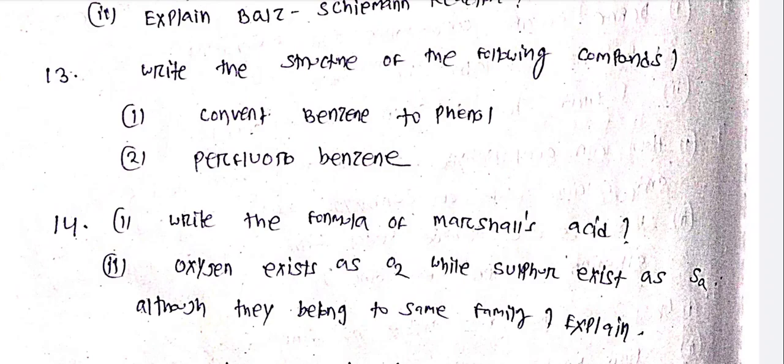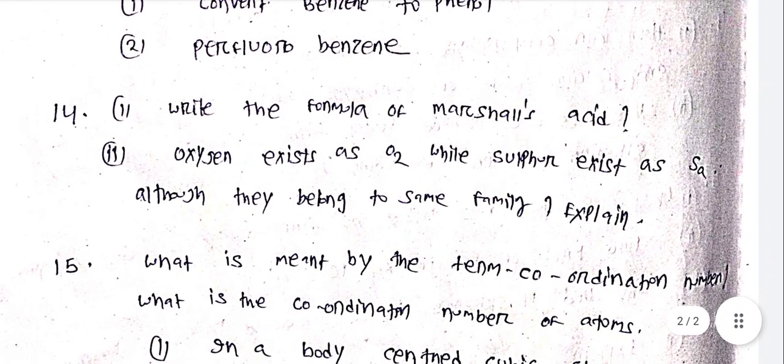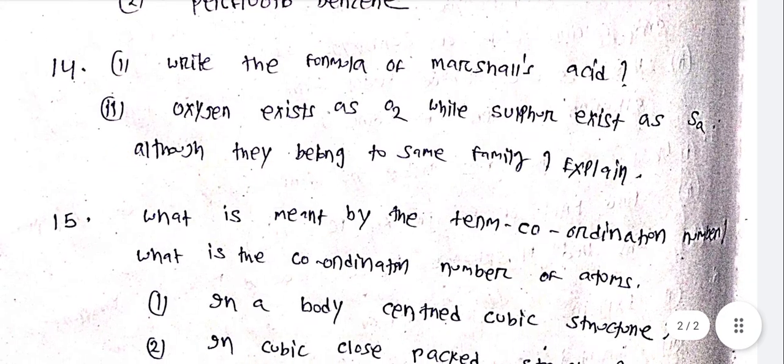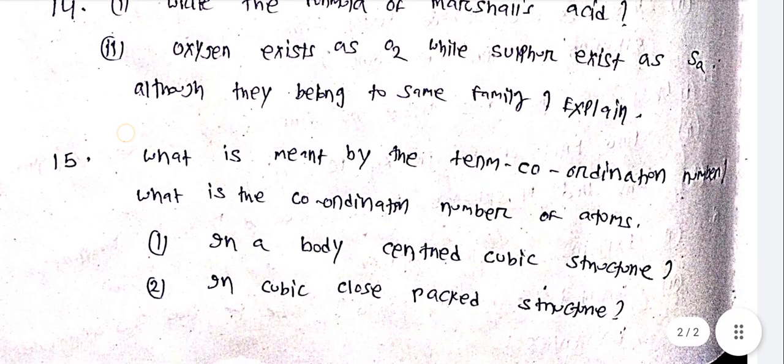Write the formula of Marshall's acid. Oxygen exists as O2 while sulfur exists as S8, although they belong to the same family. Explain.